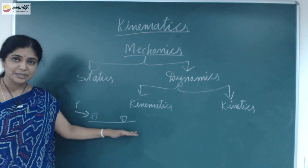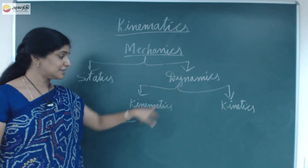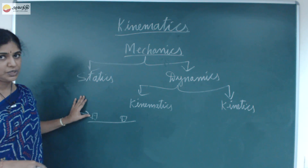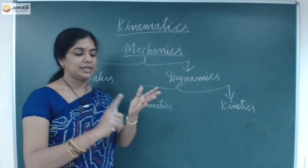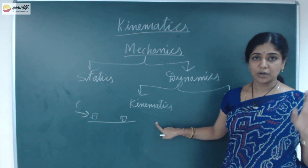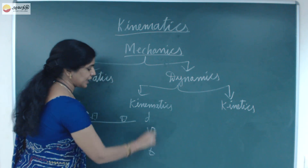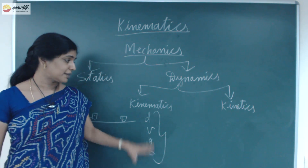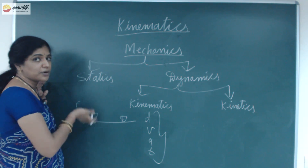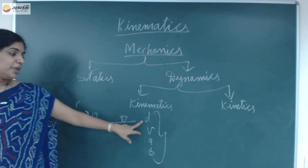So in dynamics, when the object is in motion it has displacement, velocity, acceleration, and time. In kinematics, we do not consider the force which is the cause for the motion. We only see the relationship between displacement, velocity, acceleration, and time — that branch of dynamics is called kinematics.